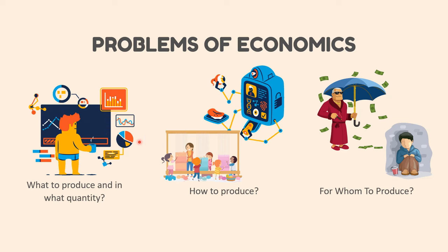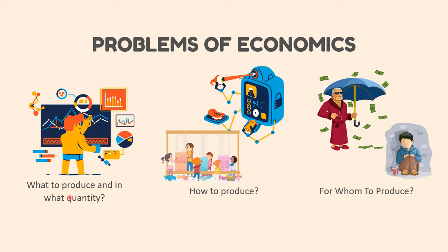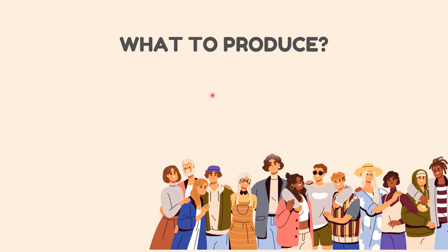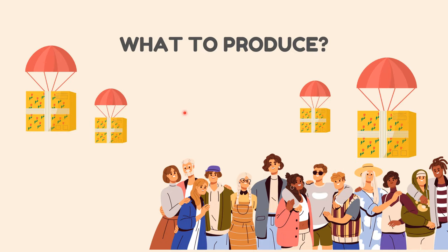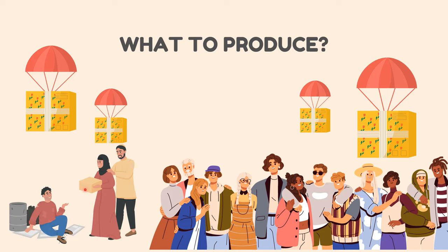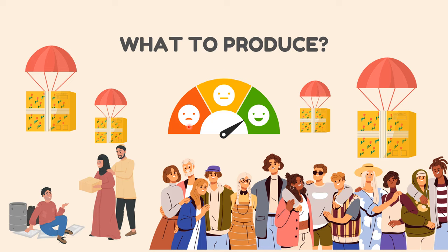Let's think about the first question: what to produce. There are different needs of every human in society, and considering that, it is decided which goods and services are to be produced and in what quantity they are required in society. As resources are scarce, the production of one good means sacrificing another.